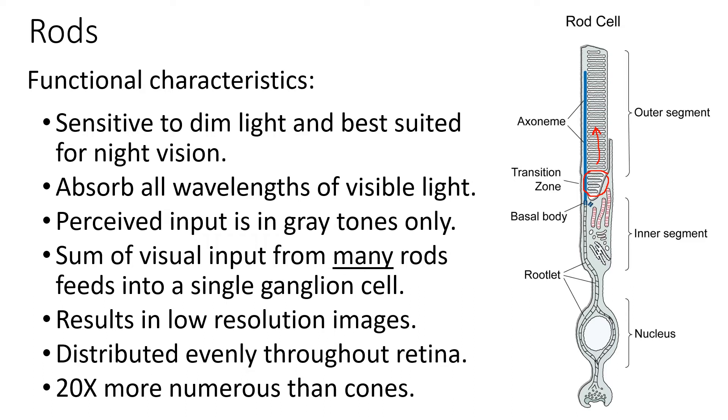Rod and cone cells consist of three regions: the outer segment containing discs with photopigments; the inner segment containing the cell's organelles — mitochondria, rough ER, smooth ER, and Golgi — where energy is liberated and proteins and lipids are manufactured; and at the bottom, the nucleus and synaptic terminals that interact with bipolar cells. The discs wear out over time; old ones at the top are shed and pulled off by the pigment epithelium while new ones form at the bottom of the outer segment. If something goes wrong in the pigment cells, rods and cones can't regenerate damaged discs, leading to disorders like macular degeneration.